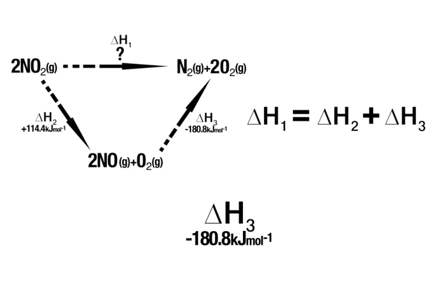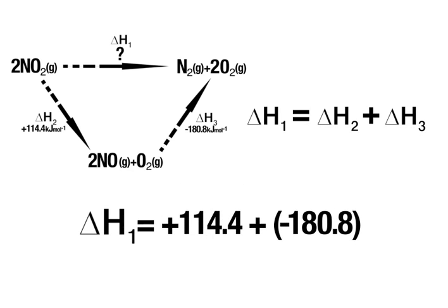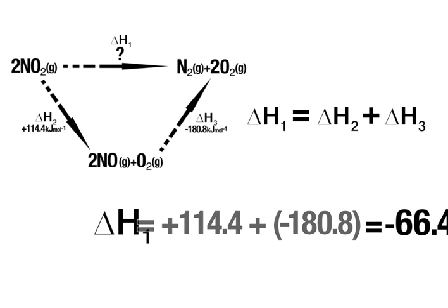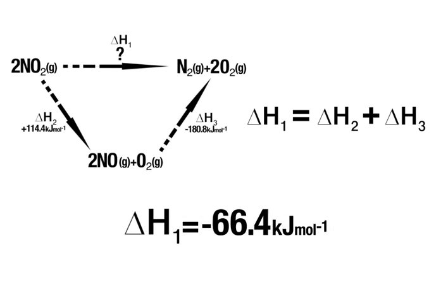So to work out ΔH₁, we add these two values together: +114.4 plus -180.8, which gives us an overall exothermic reaction, -66.4 kJ per mole. If we look back at Miguel running route 1, we can see that energy is transferred out, indeed making it an exothermic reaction.